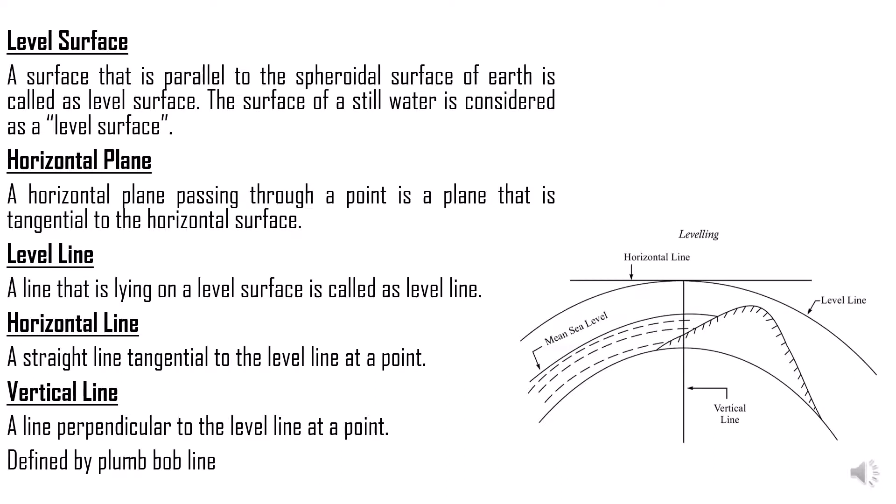A line that is perpendicular to the level line at a point is what we call a vertical line. A vertical line is generally defined as the plumb bob line at a particular point — if you locate a plumb bob at any point on the level line, it gives you the vertical line. To summarize: a level surface is a surface parallel to the spheroidal surface; a level line lies on that surface; a horizontal plane is tangential to the level surface; and a vertical line is perpendicular to the level line.